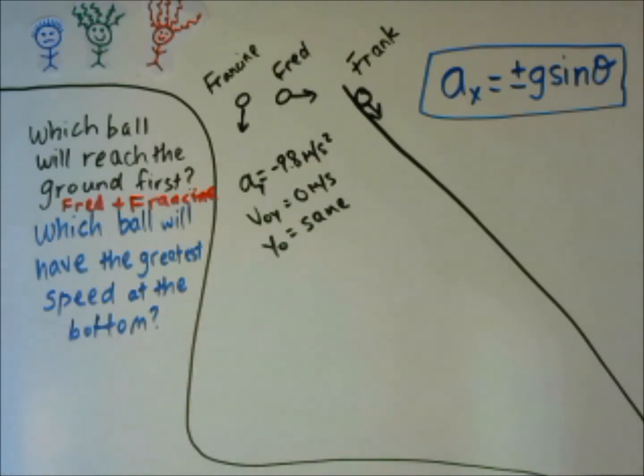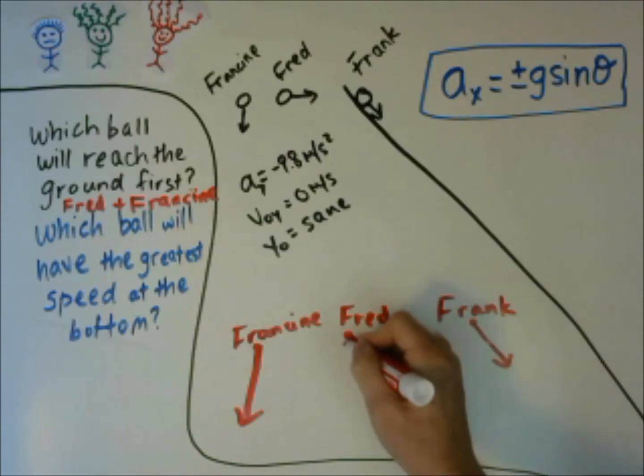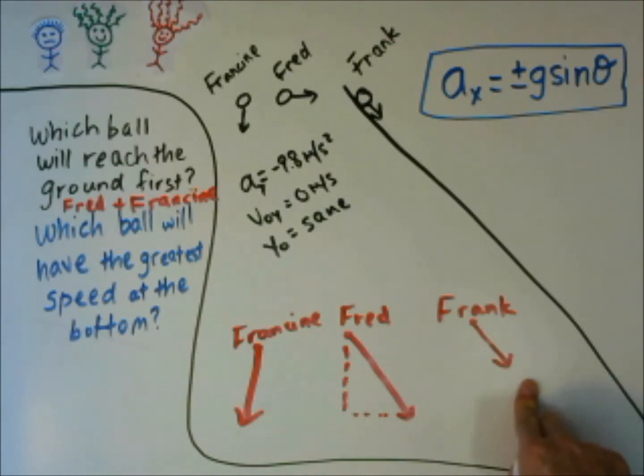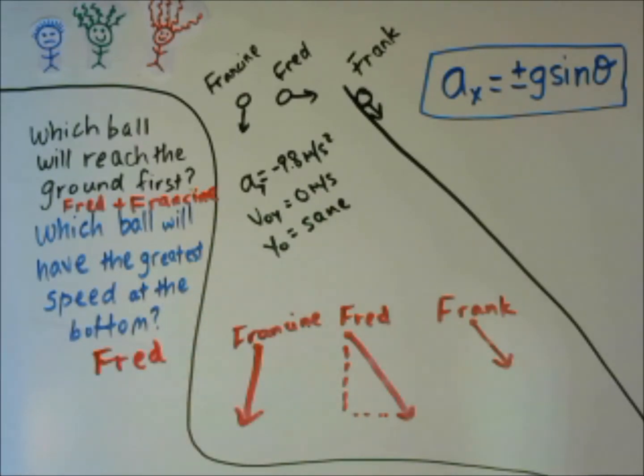Which ball will have the greatest speed at the bottom? At the bottom, the magnitude of the vectors will be like this. Francine's has a vertical velocity. Fred's has the same vertical velocity, but also has a horizontal velocity. So overall has a greater magnitude. Frank's ball has no initial velocity, and it has a smaller acceleration. So at the bottom, its speed will be less in magnitude than Fred's. So the answer is Fred will have the greatest speed at the bottom.